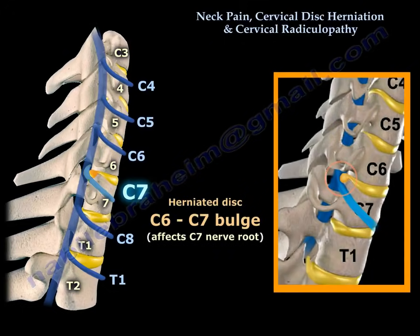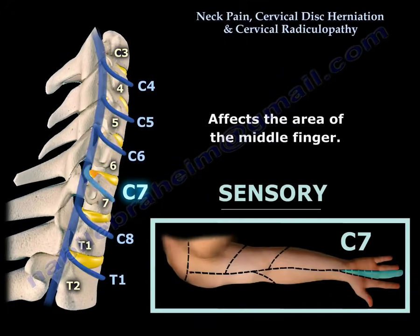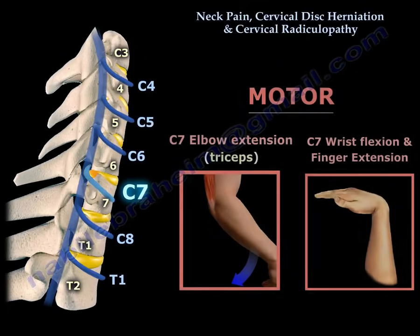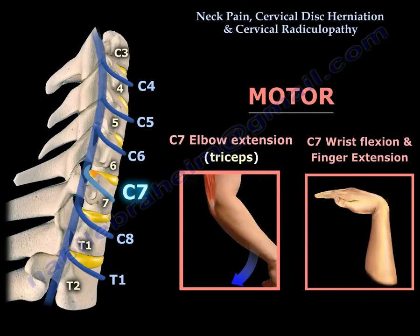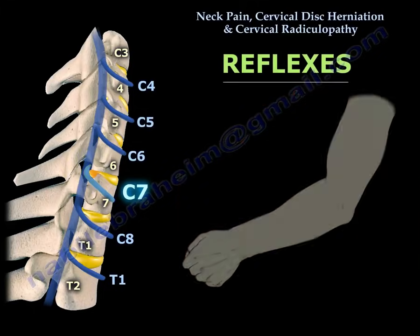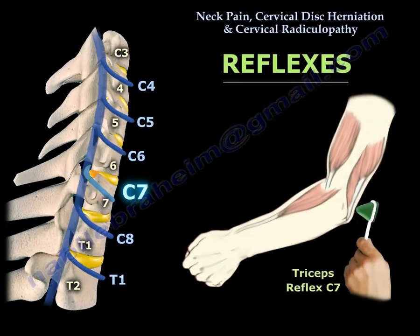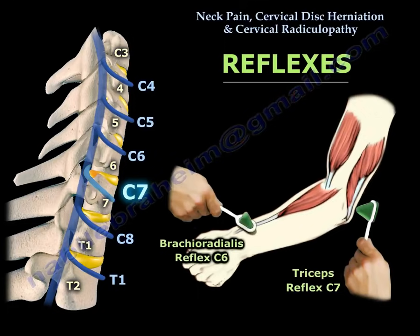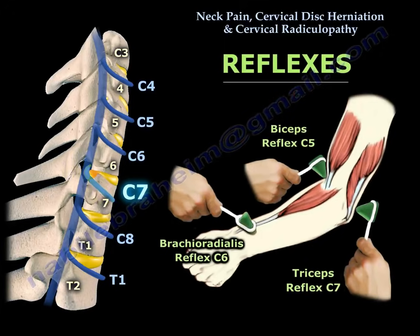A C6-C7 disc bulge or herniation will affect the C7 nerve root. The sensory deficit in C7 involves the middle finger. Motor function at C7 includes elbow extension via the triceps, as well as wrist flexion and finger extension, assuming the shape of the number 7. For reflexes: C7 is the triceps reflex, C6 is the brachioradialis reflex, and C5 is the biceps reflex.